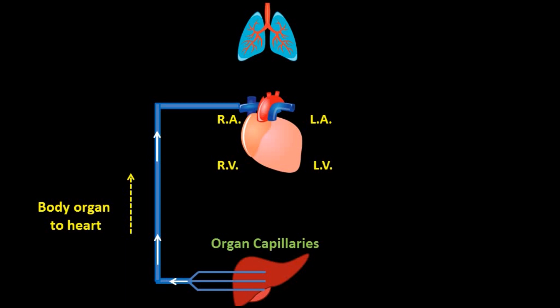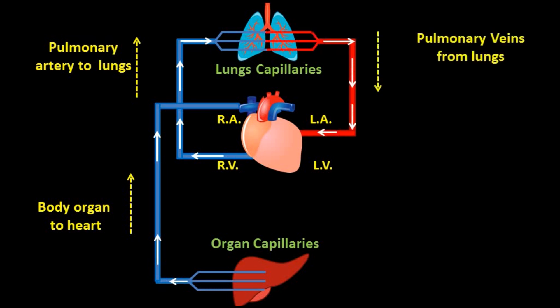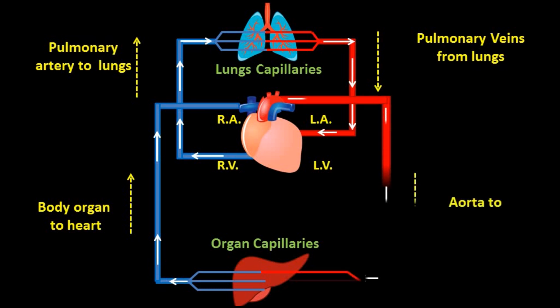When blood enters the right atrium of the heart, it goes to the right ventricle and is transported toward the lungs via the pulmonary artery for the oxygenation process. Around the lungs there are lung capillaries where deoxygenated blood is converted to oxygenated blood by removing carbon dioxide and mixing in oxygen. This oxygenated blood then enters the left atrium via pulmonary veins, passes into the left ventricle, and is supplied to different parts of the body via the aorta.